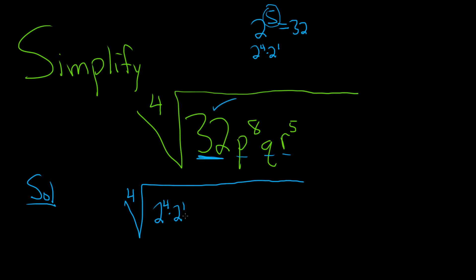P to the 8th, we can write that in a clever way as P squared to the 4th power. And that's because 4 times 2 is 8. So if you multiply these, you do get back the 8. The q kind of hangs out. You can't really do anything with that.